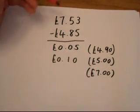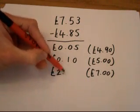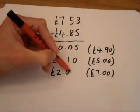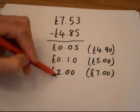And what did I add on to £5 to get to £7? I added on £2. So I'm going to put £2 in my columns, 2 in my units column.